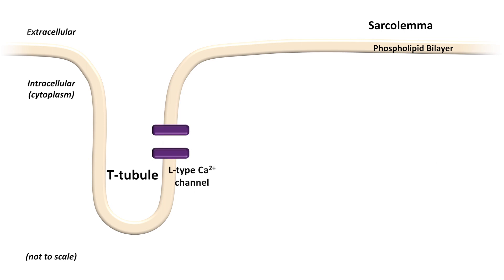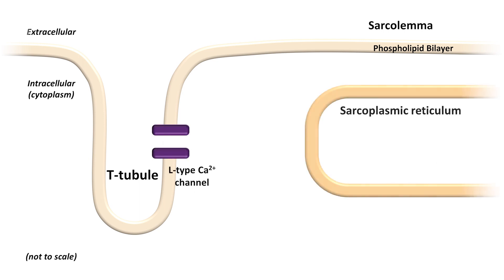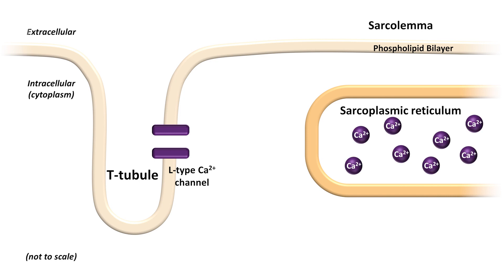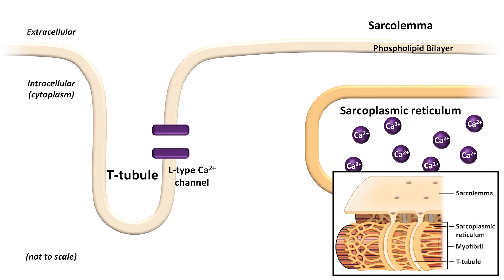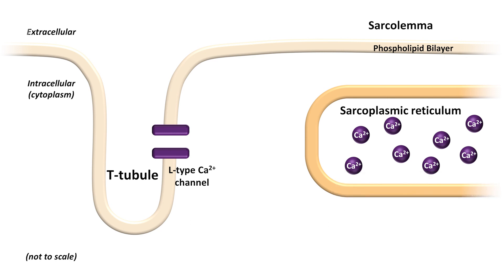These L-type calcium channels are in close proximity to the sarcoplasmic reticulum, which is a membrane-bound structure consisting of a fine extensive network of membranes within the myocyte, whose primary function is the storage of calcium ions. The network of the sarcoplasmic reticulum surrounds the myofibrils, which are the individual fibers that run longitudinally through the entire length of the cell.